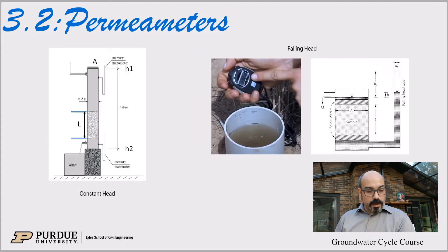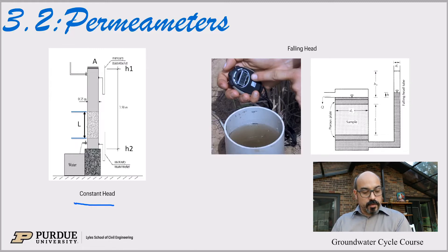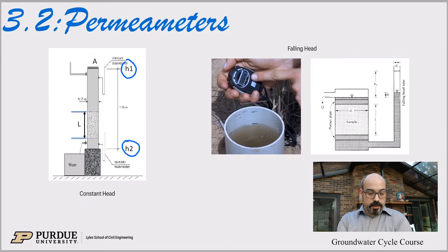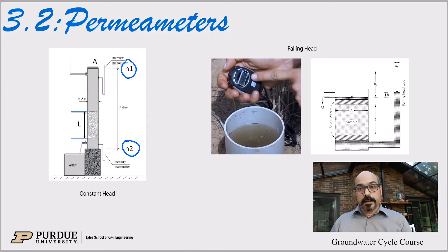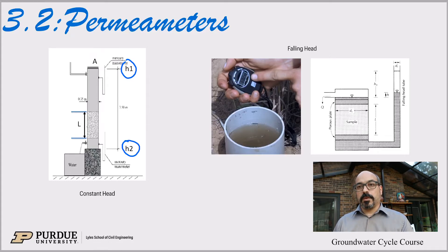There are two types of permeameters to consider. One is the constant head permeameter, where we maintain H1 and H2 constant — it's open to the atmosphere at H1 and H2. So we know what the head is and we can do Darcy's experiments. A problem in the field is that we can't always take a core out of the ground and measure the hydraulic conductivity directly, or do those experiments in the field.